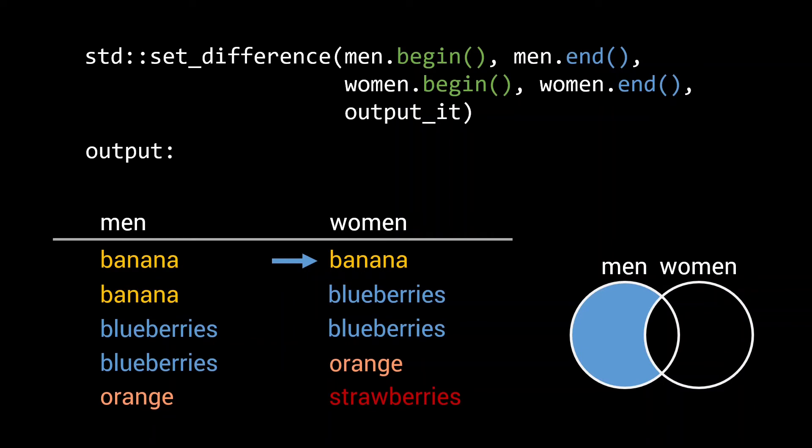That is, remove all elements in the second set from the first set. Here, one of the banana elements, the two blueberries, and the orange are subtracted, leaving a single banana element as the output of the operation.